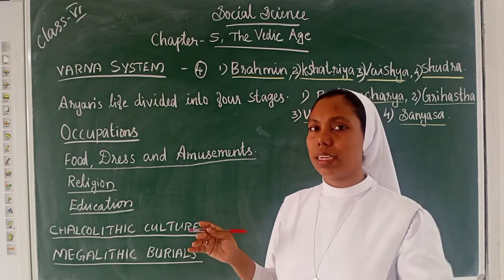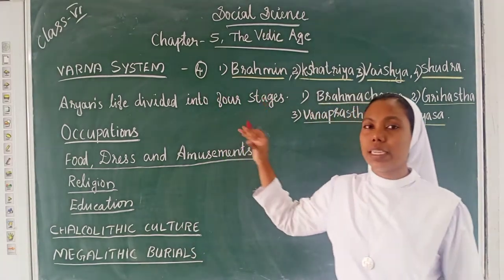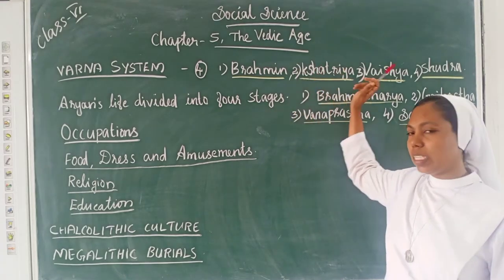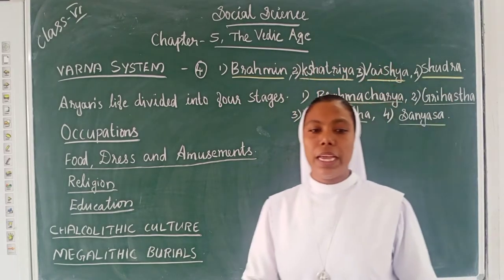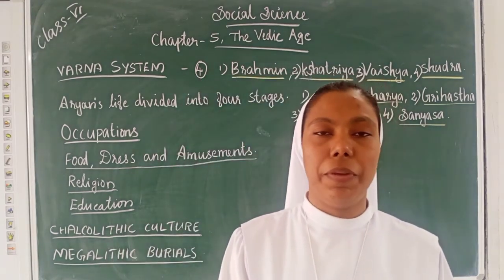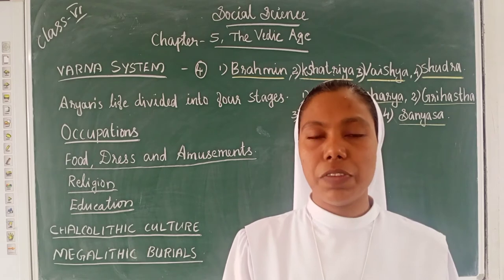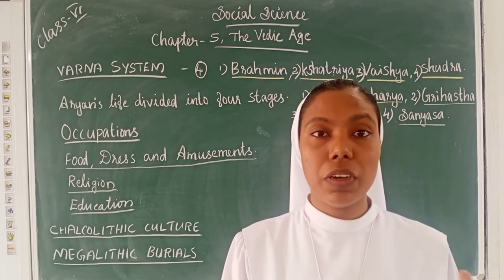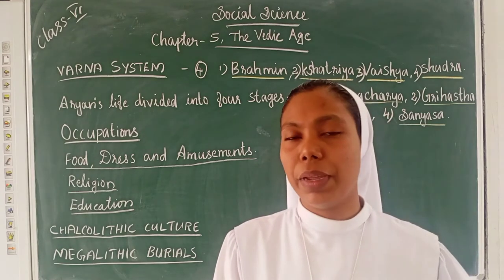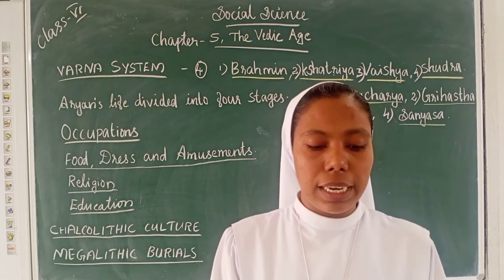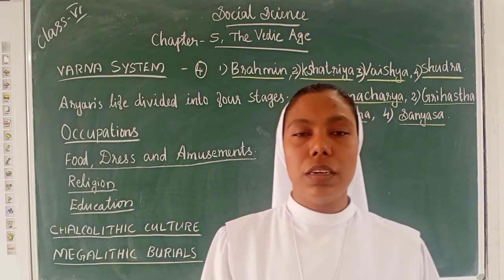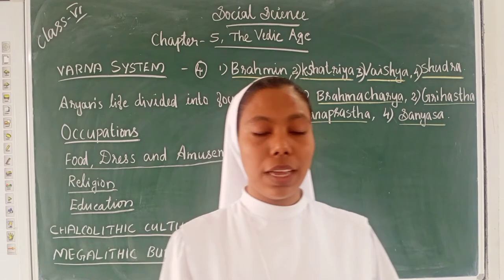So the Varna system divided society into four sections: Brahmins, Kshatriyas, Vaishyas, and Shudras. Initially the social division was based on occupation — those doing the same job came under one group — but later it developed into the caste system.